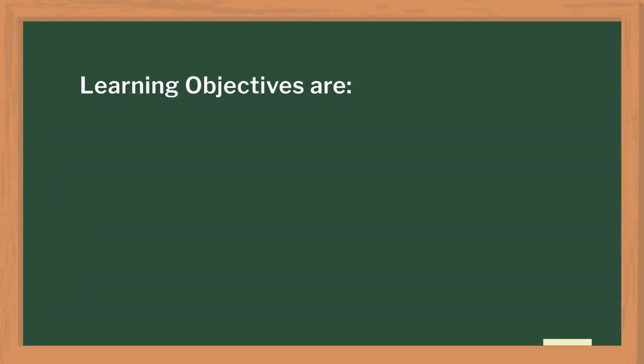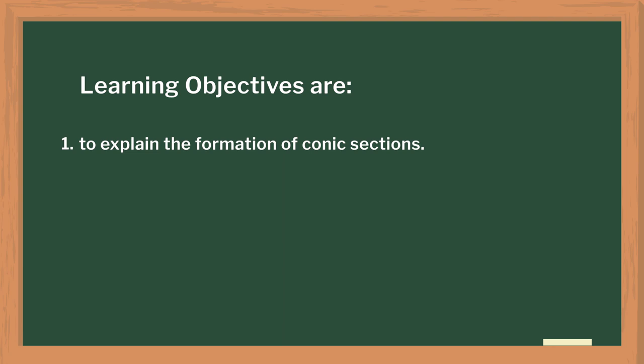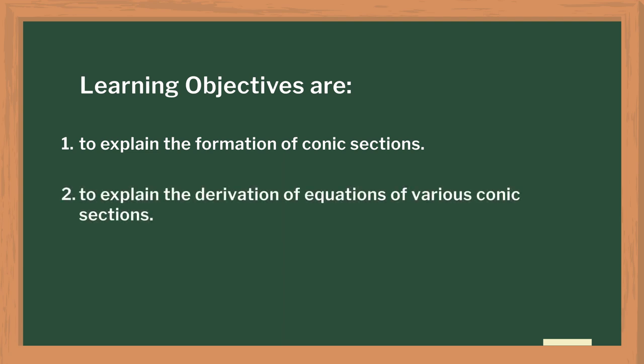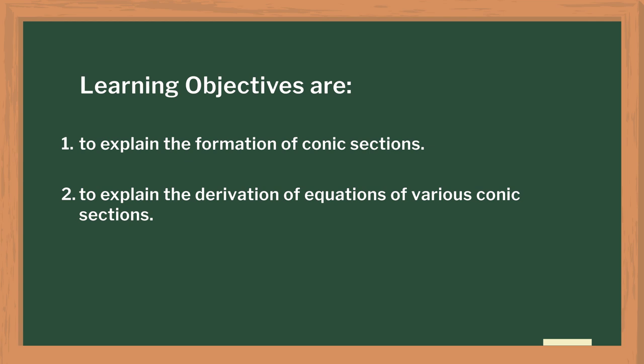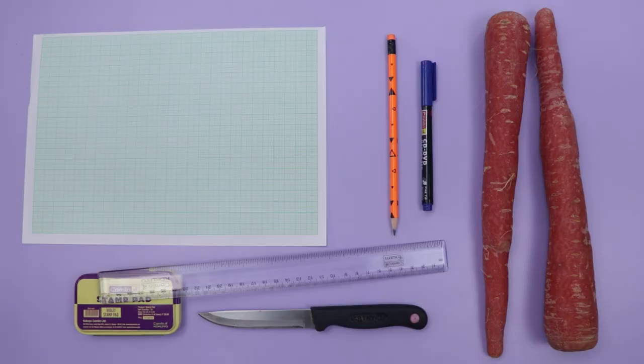This topic is generally taught in standard 10th and 11th in most schools. The main objectives of this lesson were to explain the formation of conic sections, to derive the equations of various conic sections, and to verify the properties related to the different conic sections. The materials required are a carrot, an ink pad, a knife, some graph sheets, and some pieces of thread.